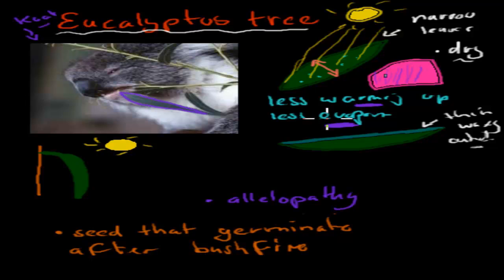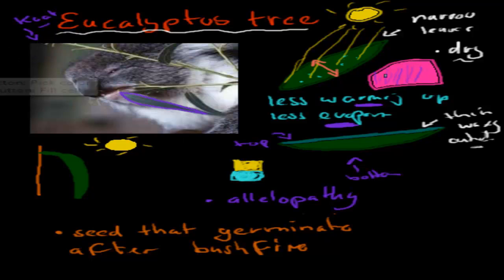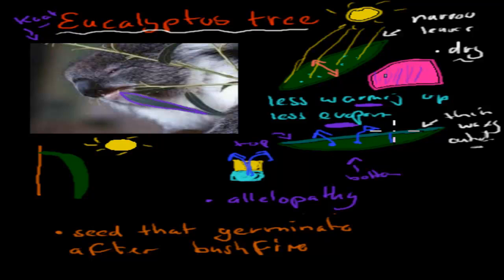If you imagine cutting this leaf down the middle and looking at it from the side — so this is the top of the leaf and this is the bottom — the waxy cuticle is a layer of wax, which is a type of fat. Fat and water don't mix, so water can't penetrate fat. Because wax is a type of fat, any water inside the leaf won't be able to pass through that waxy cuticle and evaporate through the leaf. So the waxy cuticle helps prevent the leaf from drying out by trapping water inside.